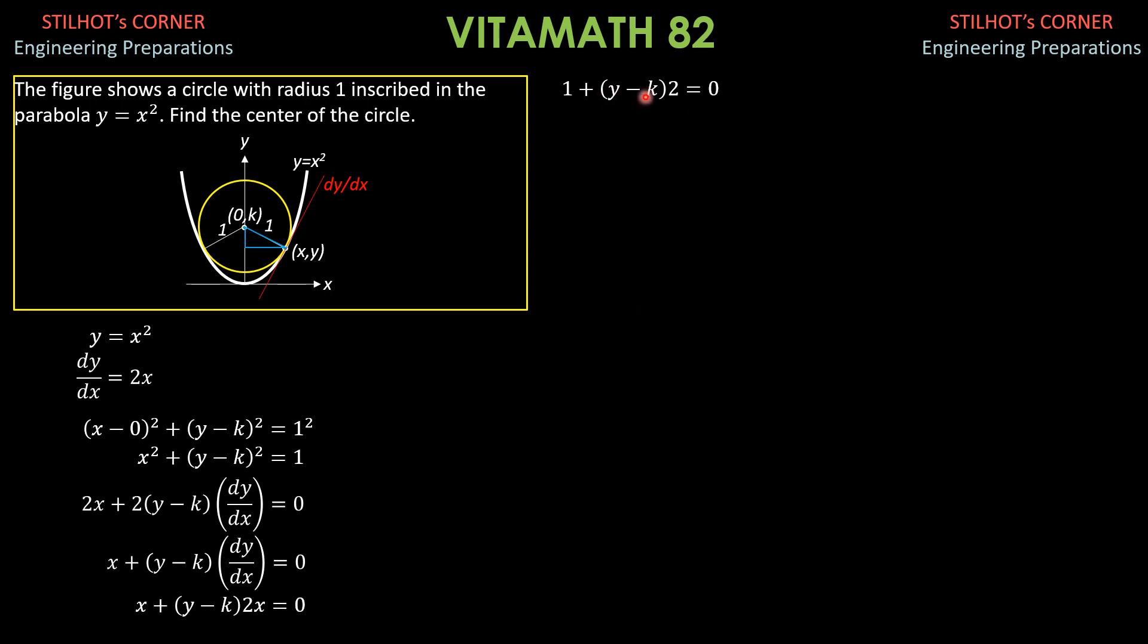So, y minus k, therefore, is negative 1 over 2 or negative 1 half. So, going back here, we substitute x square plus y minus k square or plus negative 1 half square. So, y is k minus 1 half from this equation, but actually, it's the same if we substitute y minus k here, which is negative 1 half.